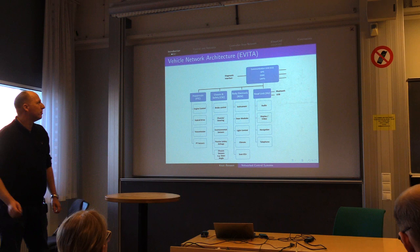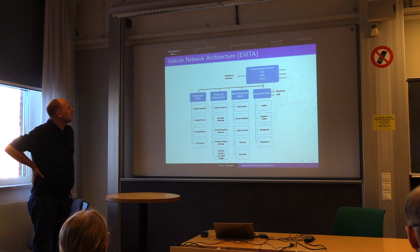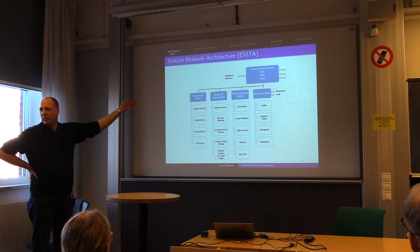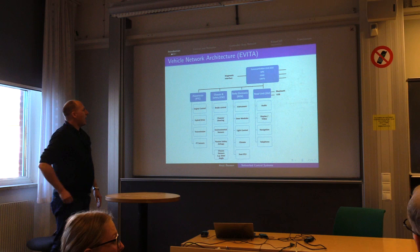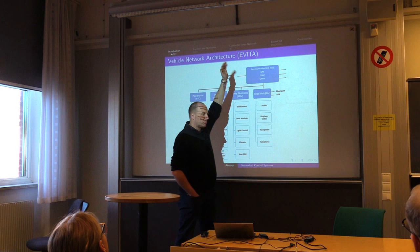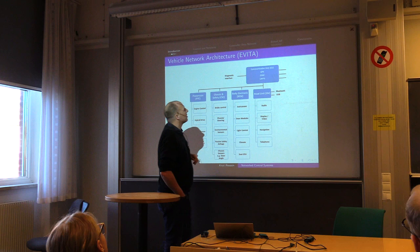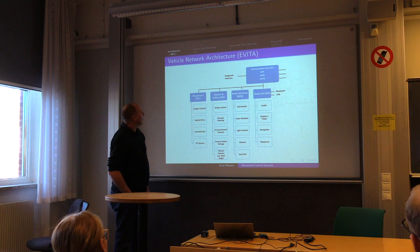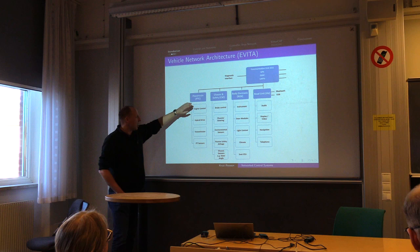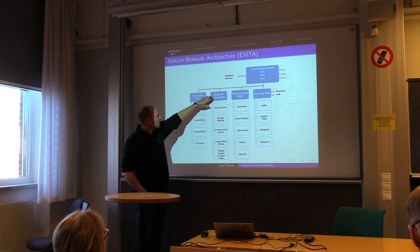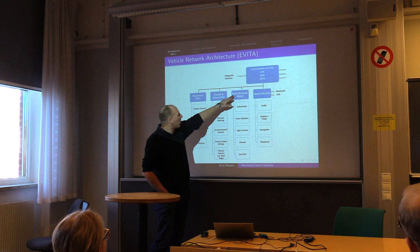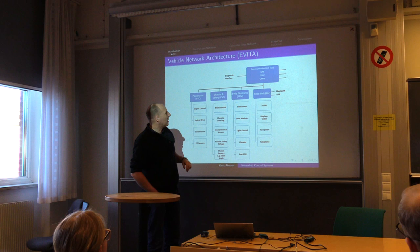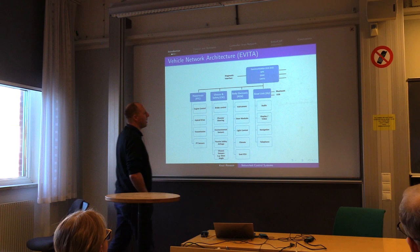If we look specifically at vehicles, this is an architecture from a research project, but basically all vendors have their own architecture that are pretty much the same. You have a communication interface — GPS, DSRC for vehicle-to-environment communication, and a data network going down into the vehicle. Different subsystems include powertrain control (engine and transmission), chassis (steering and braking), body electronic modules (instruments, doors, lights, climate), and head units (audio, display, navigation, phone).